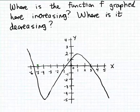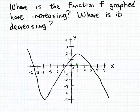So here's how we're going to discover this. Remember, we're asking where the outputs are increasing or where the outputs are decreasing as the inputs increase. So as we move from left to right along the x-axis — in other words, as the inputs are increasing — what we'll be looking for is where the graph is rising or where the graph is falling, because that's going to correspond to the outputs increasing or decreasing.